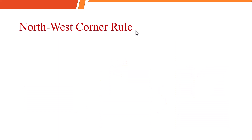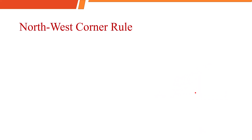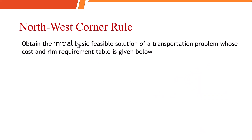The Northwest Corner rule is extremely simple. Follow the direction that we have: North, South, East, and West. Within a specific table, you are always going to start from the Northwest region and then move on to proceed with the rest of the allocations. We are given a numerical problem about obtaining the initial basic feasible solution for a transportation problem, where we are given the cost and the RIM requirement in the table below.